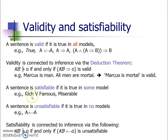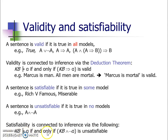So in some model, if it is possible that someone is rich and famous and also miserable, then the two statements — 'rich and famous' and 'miserable' — are satisfiable in the given model. A sentence is unsatisfiable if it is true in none of the models. Any statement and the negation of it will not both be possible in any world, which is why such statements are unsatisfiable. Satisfiability is connected to inference as follows: the knowledge base entails alpha if and only if knowledge base AND negation of alpha is unsatisfiable.